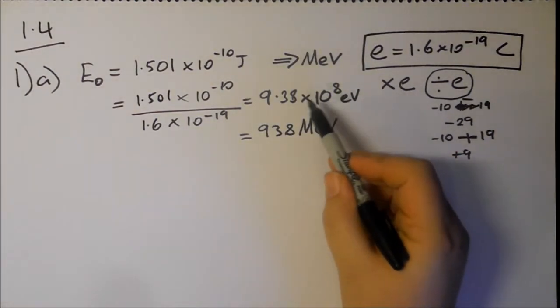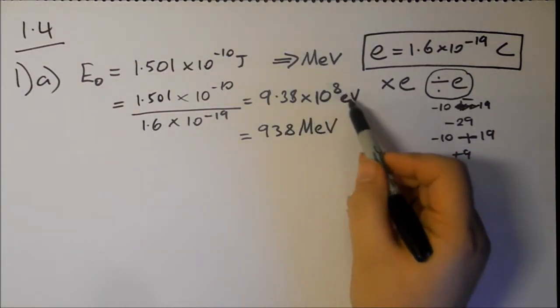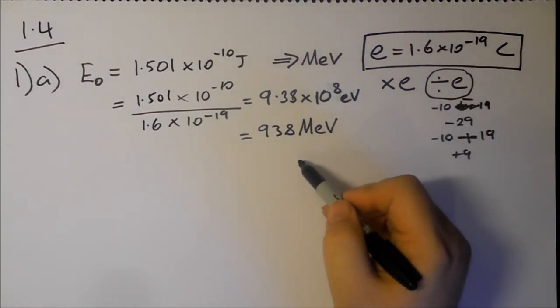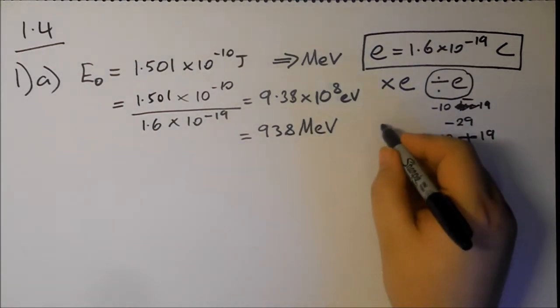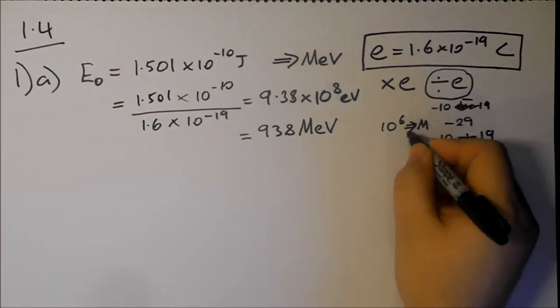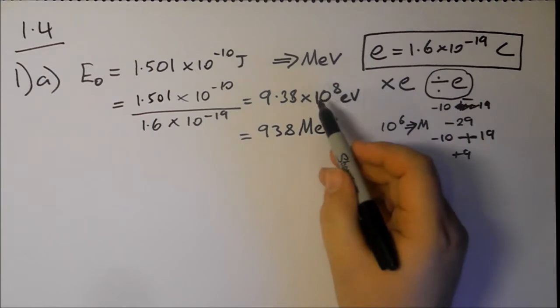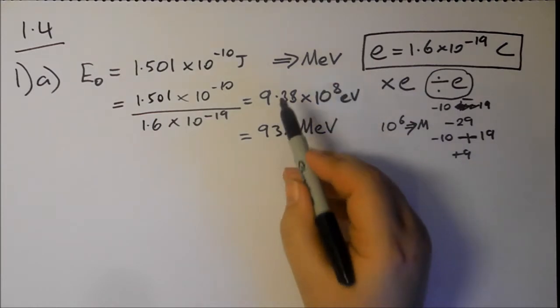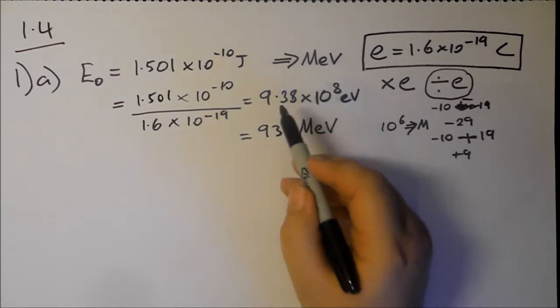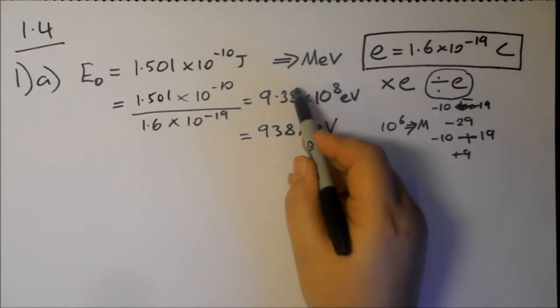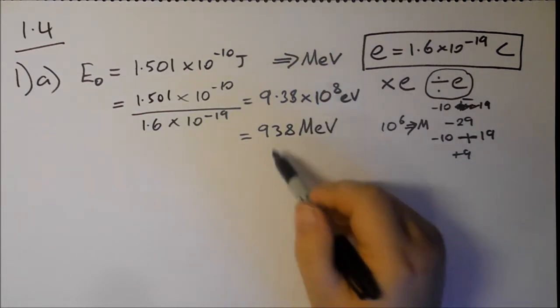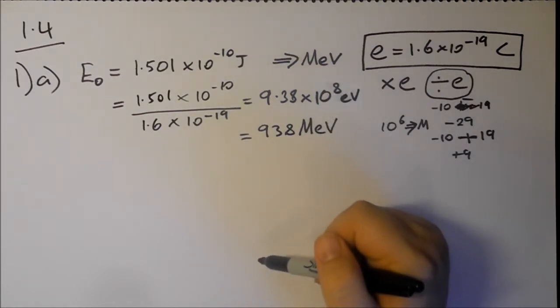We get 9.38 times 10 to the 8 eV. We want 10 to the 6 eV, because 10 to the 6 is mega. So we've got 10 to the 8, we want 10 to the 6. Move the decimal place, this number will go down 2, which is what we want. So we get 9.38 MeV.